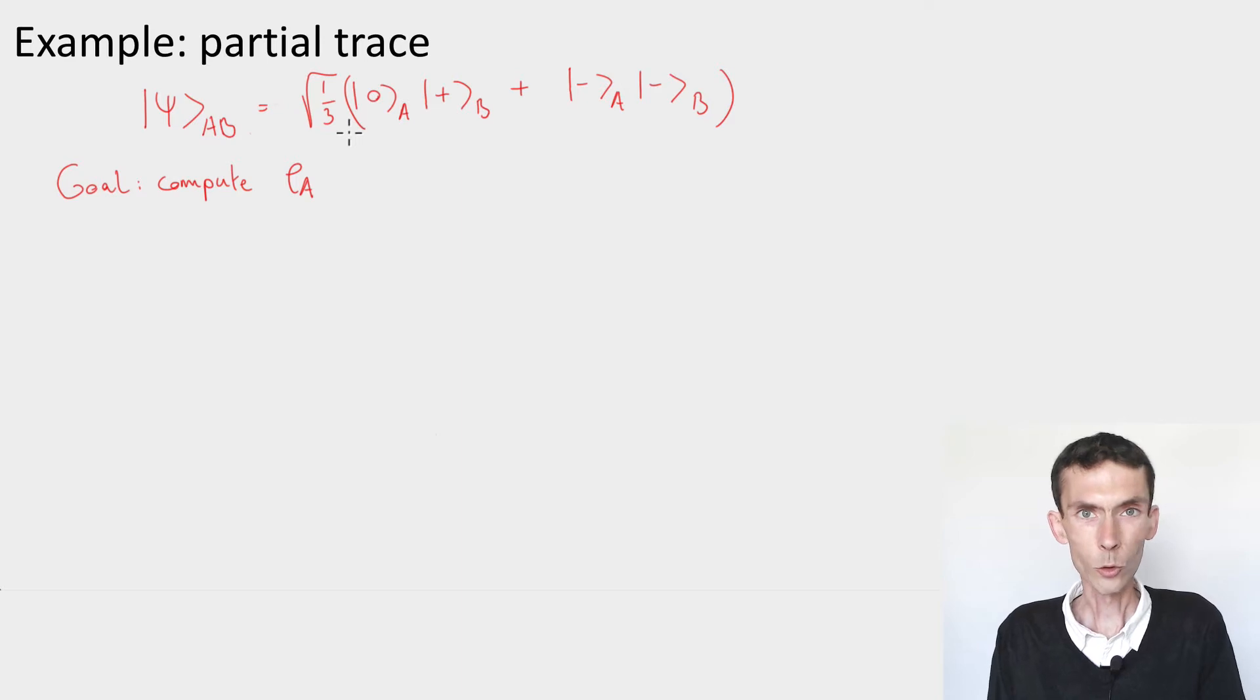So we have to choose this basis in order to measure the B system. And that's the most important thing that you have to do is find the easiest basis.